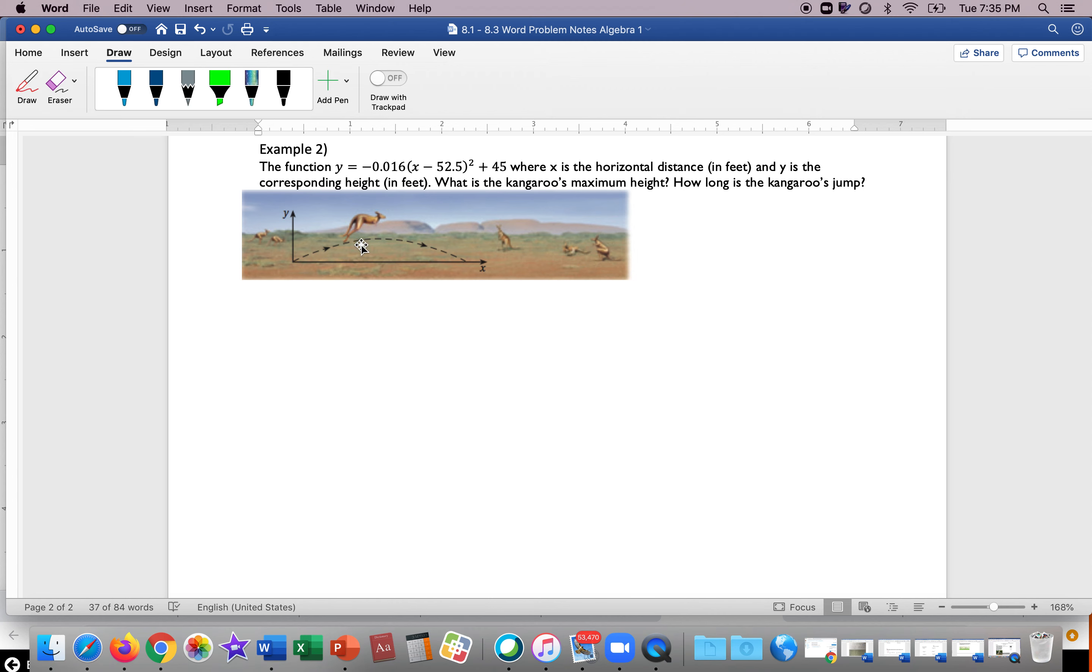Okay, so for this second problem, what we're looking at is a problem that's now in vertex form. This is in vertex form, and the last one we looked at was in standard form. Both forms you can still find vertex, axis of symmetry, everything—they're just written in a different fashion.